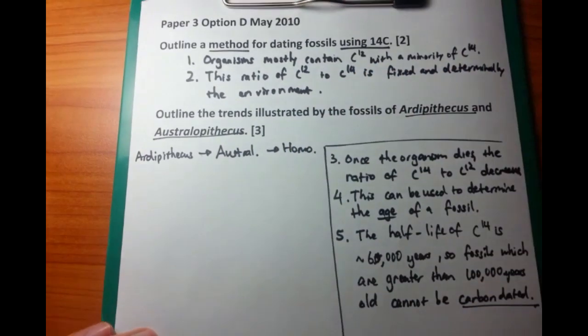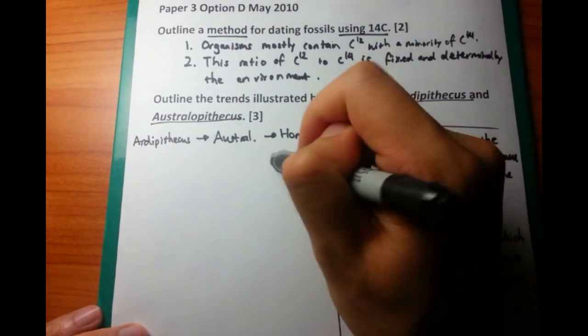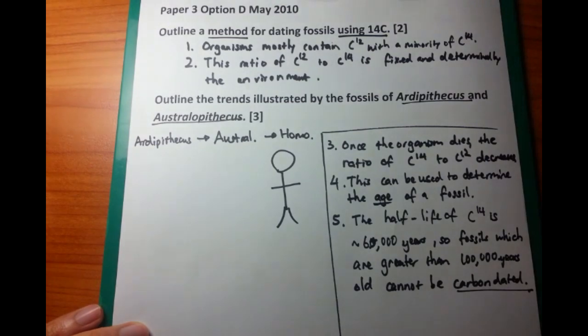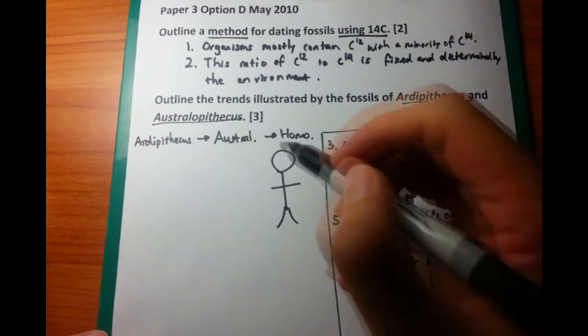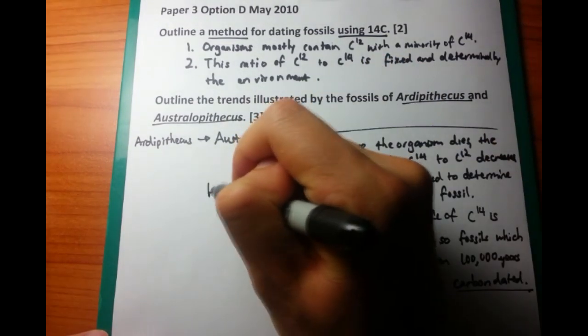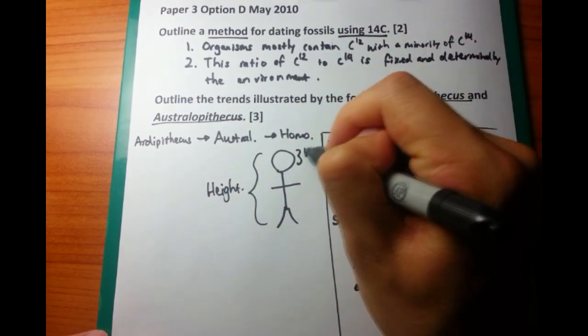And the easiest way to go about this question is to first realize that Ardipithecus is more primitive than Australopithecus. How do you know this? They're actually just in alphabetical order. So AR comes before AU. Therefore, Ardipithecus comes before Australopithecus.